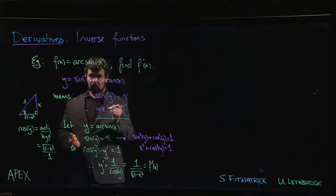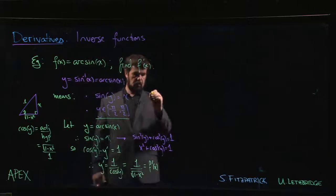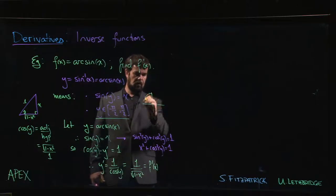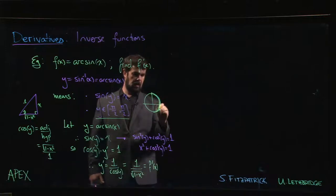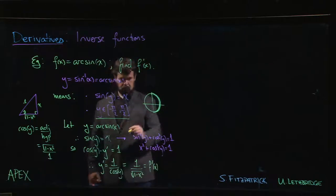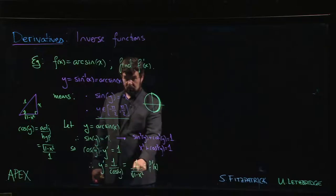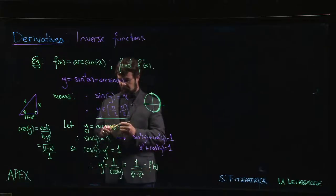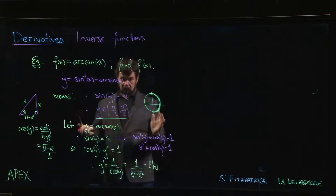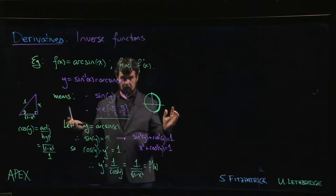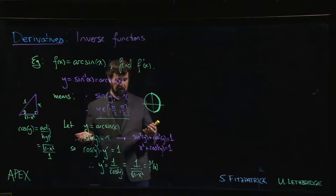Well remember that in the definition of arc sine there's this other piece of information. We're not just saying that sine of y equals x, we're also saying that y has to be between minus pi over 2 and pi over 2. So that means, thinking in terms of the unit circle, y is somewhere in here. And what do we know about cosine in these two quadrants? Cosine is always positive in those two quadrants. So I know when I'm solving for cosine that I should take the positive square root. So I know that that's the right answer, and that's going to work for any x value between minus one and one.